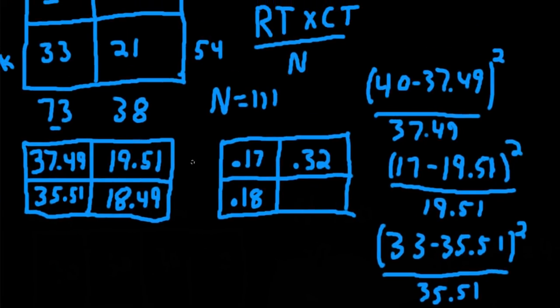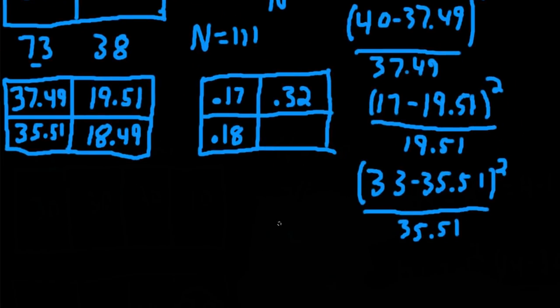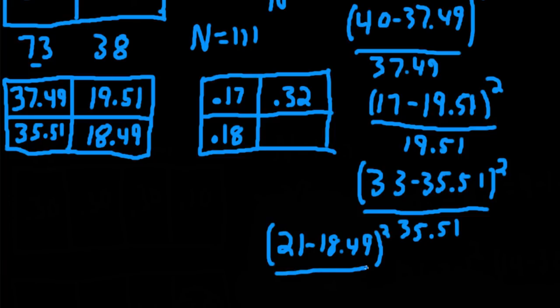And finally, for the last cell, take 21 minus 18.49, squared, and divided by 18.49. And we get 0.34.